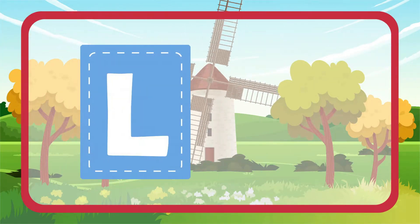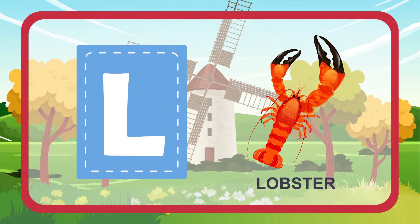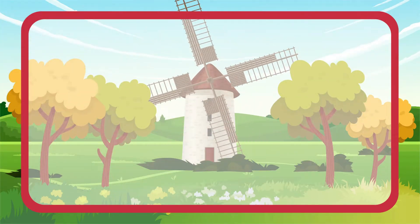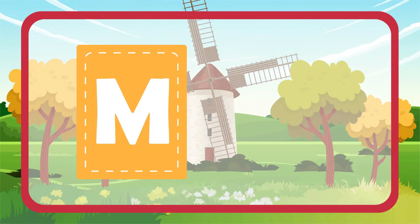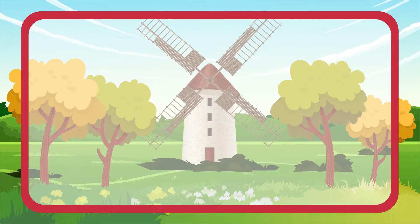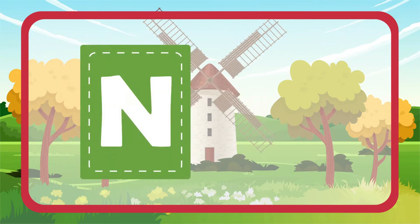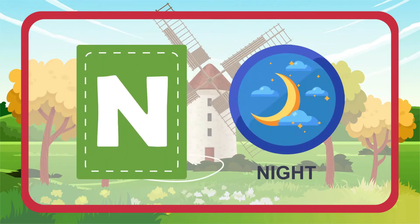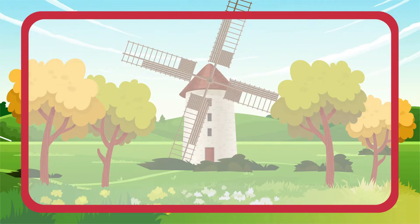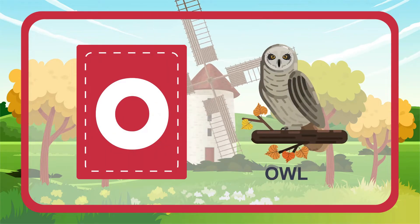L is for Lobster. M is for Moon. N is for Night. O is for Old.